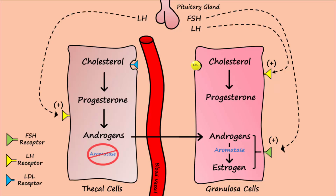However, unlike the thecal cells, the granulosa cells lack the enzymes to convert progesterone into androgens. So most of the progesterone diffuses into the blood. This is why after ovulation we see a rapid rise in progesterone. After ovulation, both the thecal and granulosa cells are making progesterone and, to a lesser extent, estrogen.